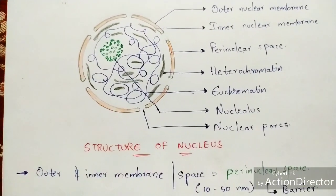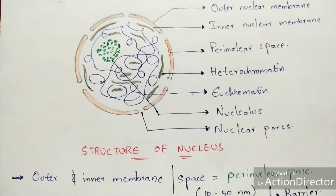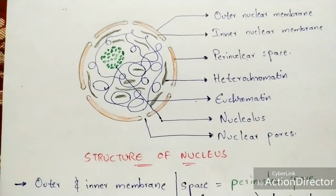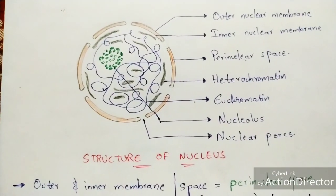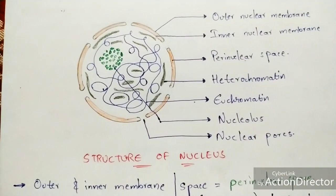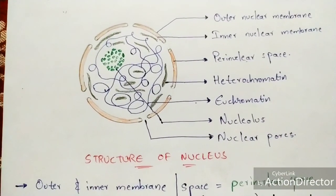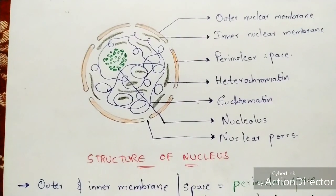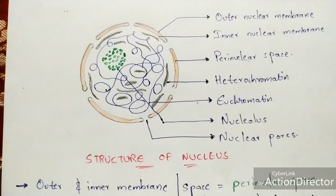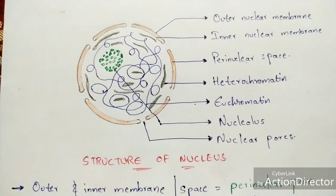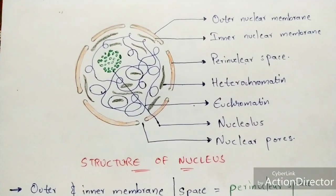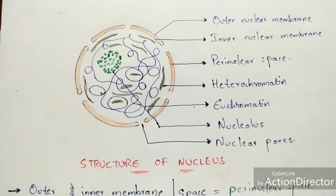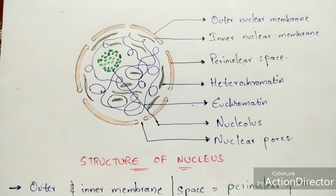To understand what a barrier means: if you take a house that consists of a hall and a bedroom, the hall and the bedroom get divided by a wall, and that wall acts as a barrier. So here, the perinuclear space acts as a barrier for the nucleus.